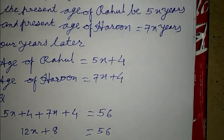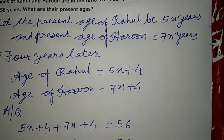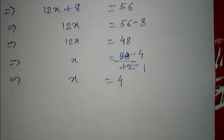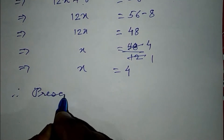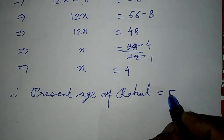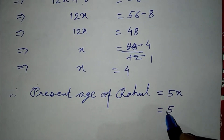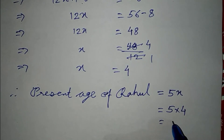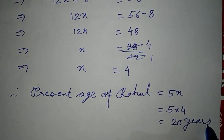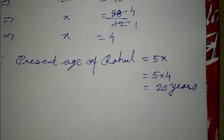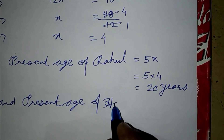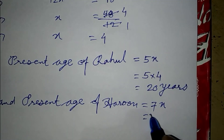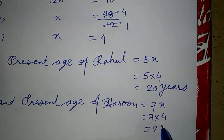Since x equals 4, the present age of Rahul is 5x, which equals 5 times 4, equal to 20 years. The present age of Haroon is 7x, which equals 7 times 4, equal to 28 years.